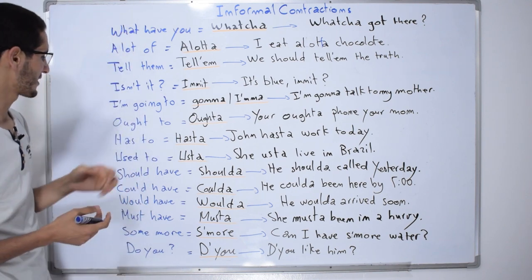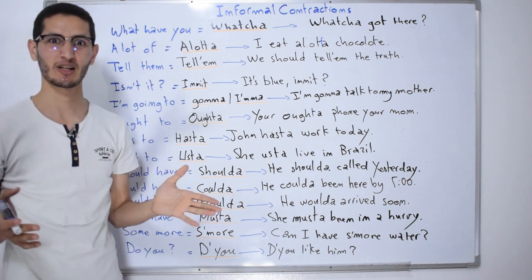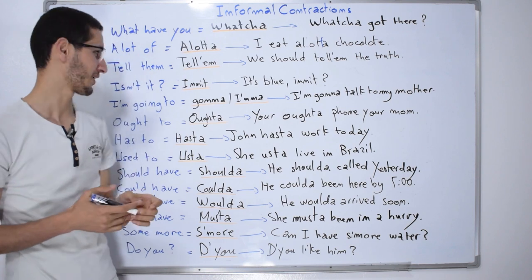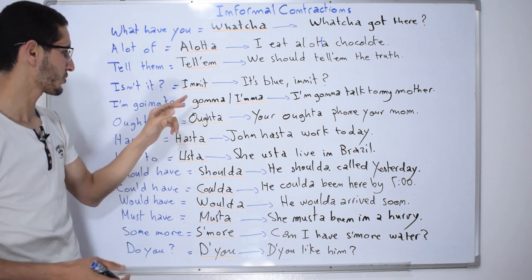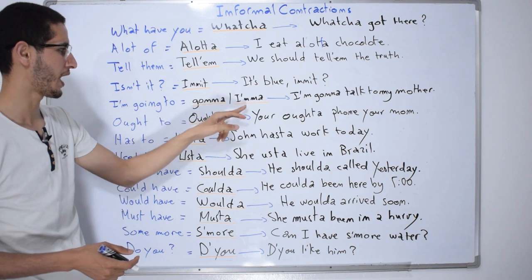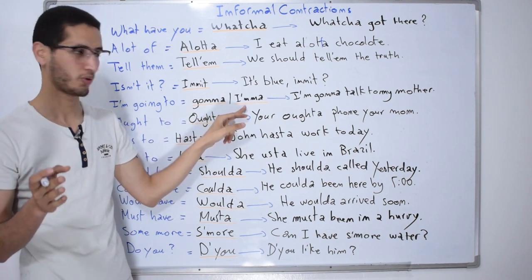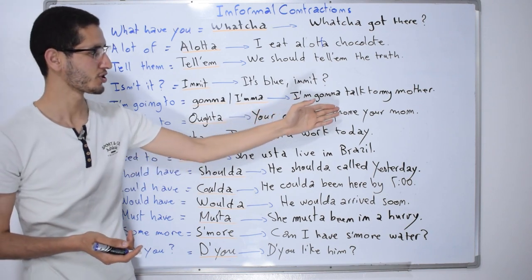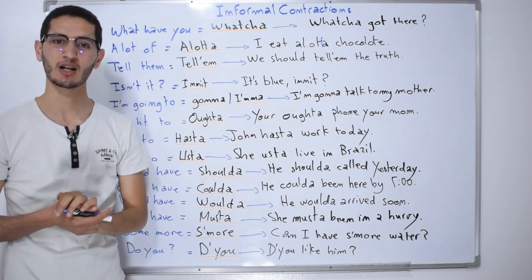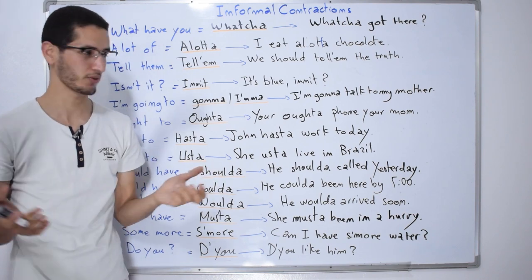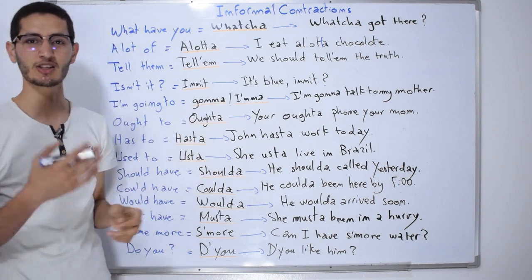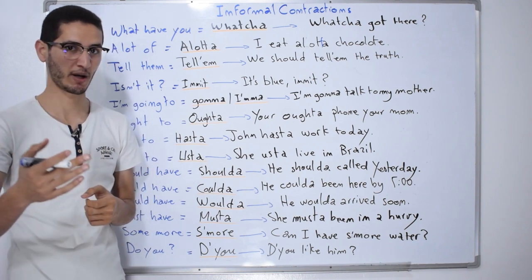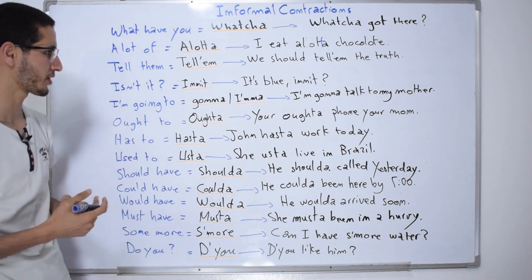'I'm going to' is one of the most used contractions in English-speaking countries, especially in the United States. Speakers say either 'gonna' or 'I'mma' — both are correct. For example: 'I'm gonna talk to my mother' or 'I'mma talk to my mother tomorrow about it.'